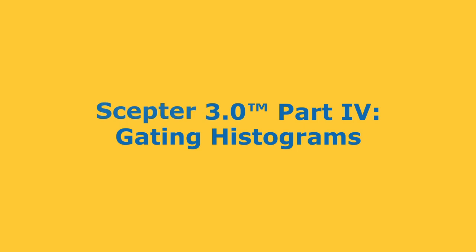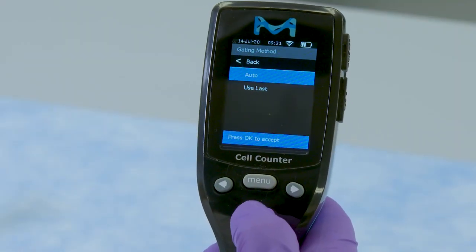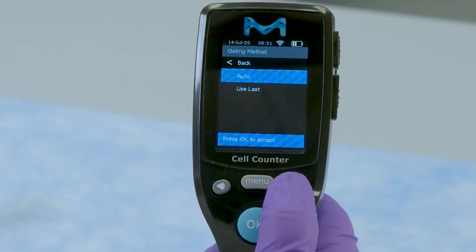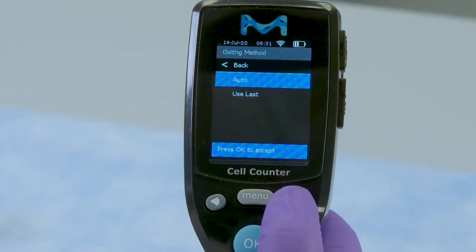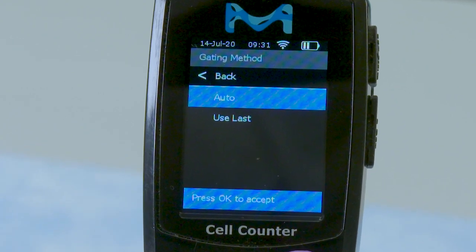Gating histograms with SEPTOR 3.0. For first-time usage set to auto gating, you can decide to continue with the gating using the auto gating setting or change to use last for similar sample runs.